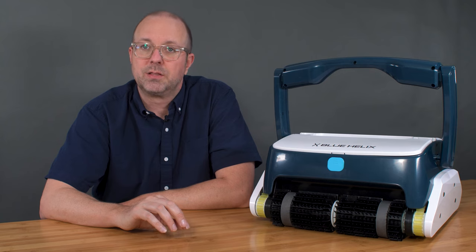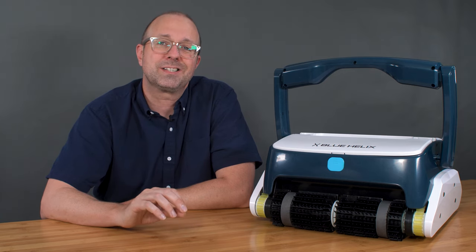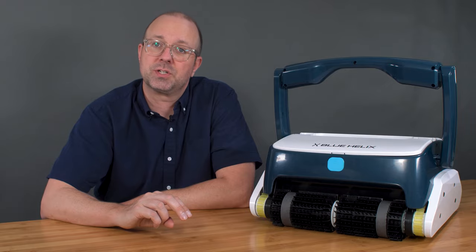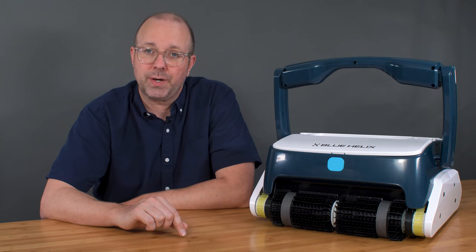Lastly, the warranty. The Blue Helix comes with a two-year warranty. While we always like to see a three-year warranty, like in units such as the Dolphin Sigma or Dolphin Premier, it is standard for units in this price range.